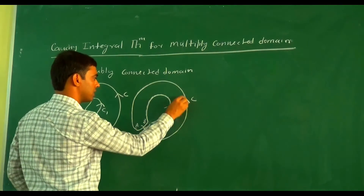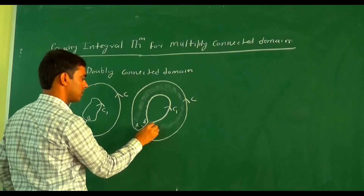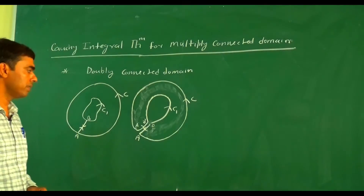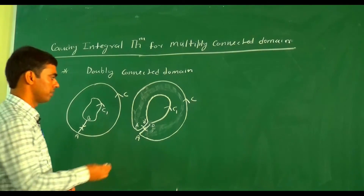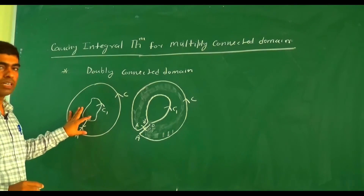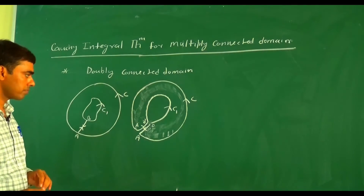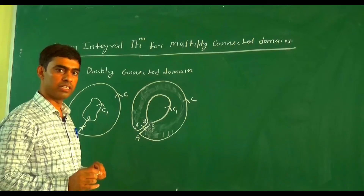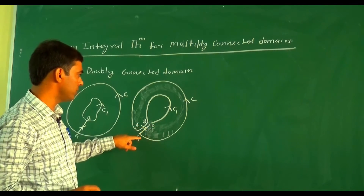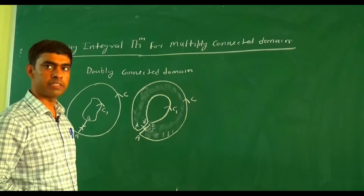This region becomes a simply connected domain. If we expand this figure, it becomes a simply connected domain — we have converted the doubly connected domain into a simply connected domain. The closed smooth curve becomes: B to A, then C, then A to B, then minus C₁.